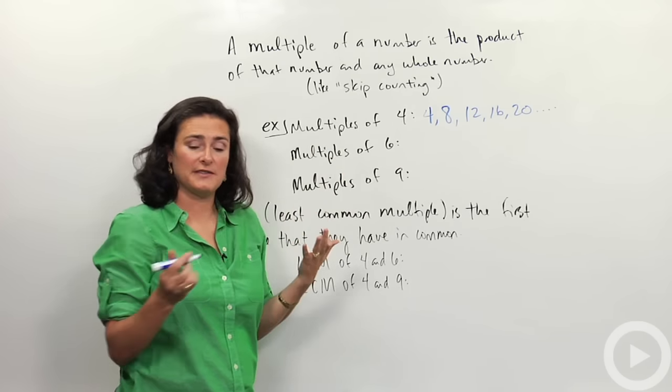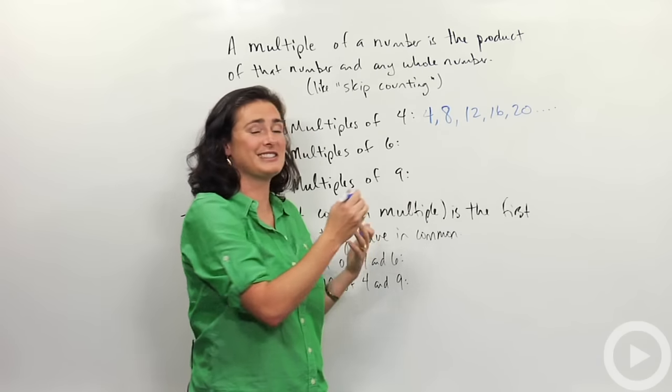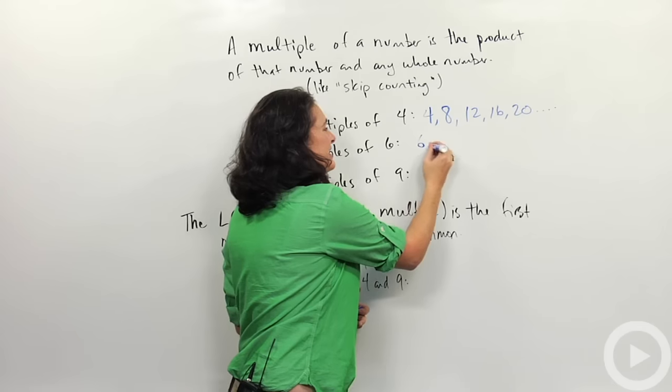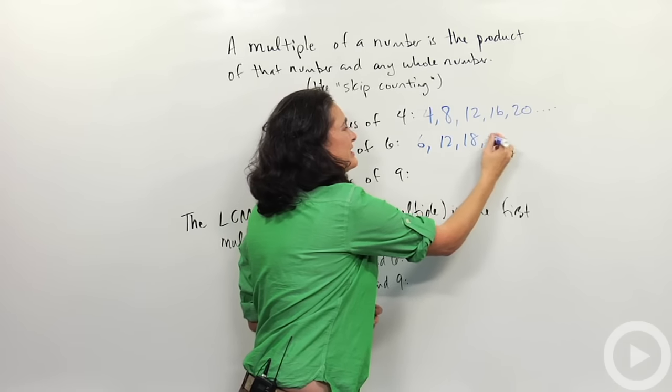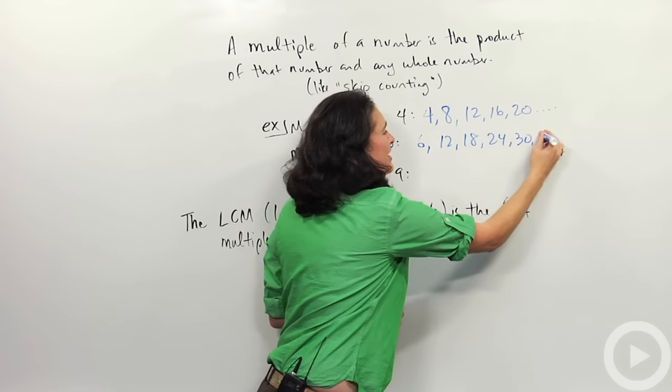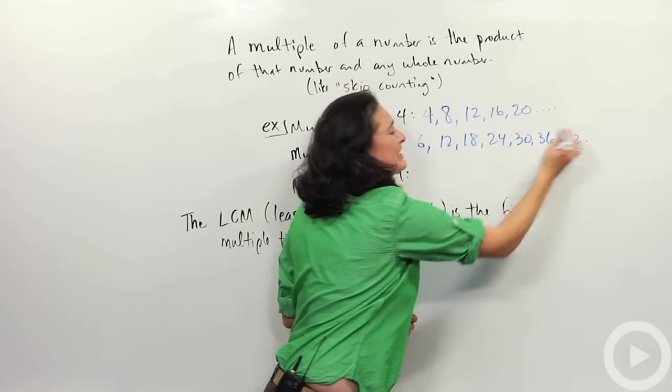Multiples of 6. You could think of skip counting. 6, 12, 18, 24, 30, 36, 42, on and on and on. You get the idea.